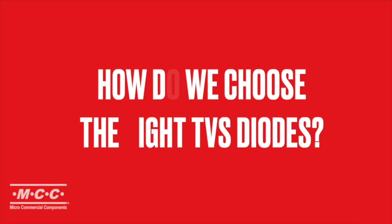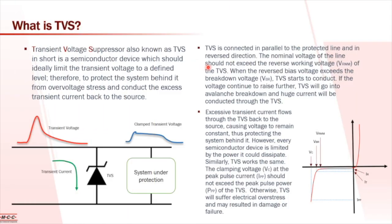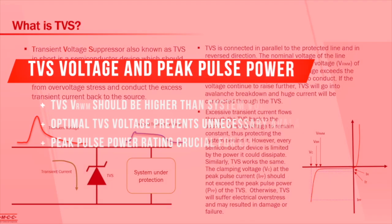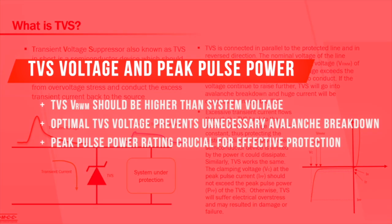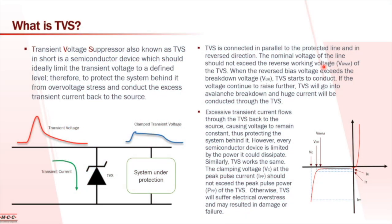So how do we choose the right TVS diode? Basically we need to look at two criteria. The first is the working voltage (VW voltage). The second is the peak pulse power. The nominal voltage of the line should not exceed the reverse working voltage of the TVS. In other words, the TVS voltage should be slightly higher than the nominal voltage of the line or system under protection.